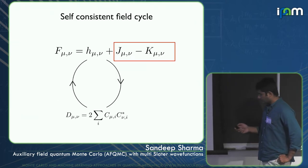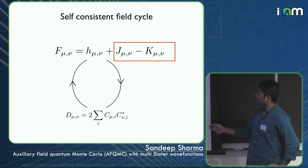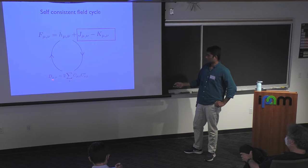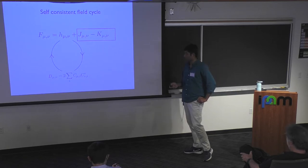The SCF algorithm looks like this: write down the Fock operator (one-body operator plus Coulomb plus exchange), diagonalize it to get molecular orbitals, take the outer product to calculate the density matrix, then use the density matrix to calculate Coulomb and exchange, and iterate until self-consistency.